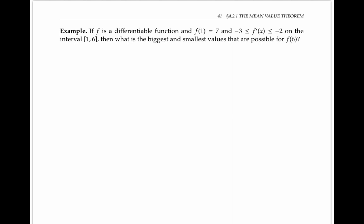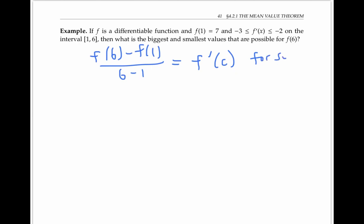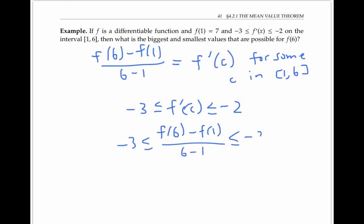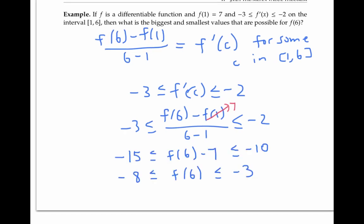More specifically, the mean value theorem tells us that the average rate of change, (F(6) minus F(1)) over (6 minus 1), is equal to F'(C) for some C in the interval [1, 6]. Since the derivative is bounded between negative 3 and negative 2, we know that the average rate of change is also bounded between negative 3 and negative 2. We know that F(1) is 7, and now we can solve this inequality for F(6) by multiplying by 5 and adding 7.